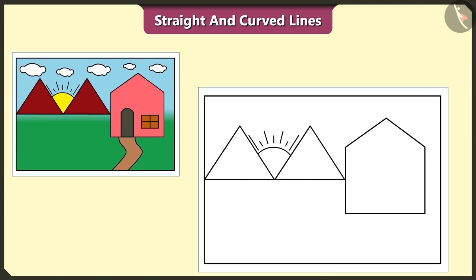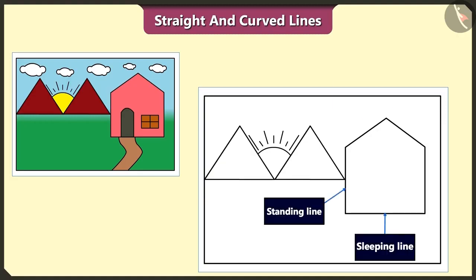So, here which of these lines are straight? Here, the standing line, the sleeping line and the slanting lines are all straight lines.